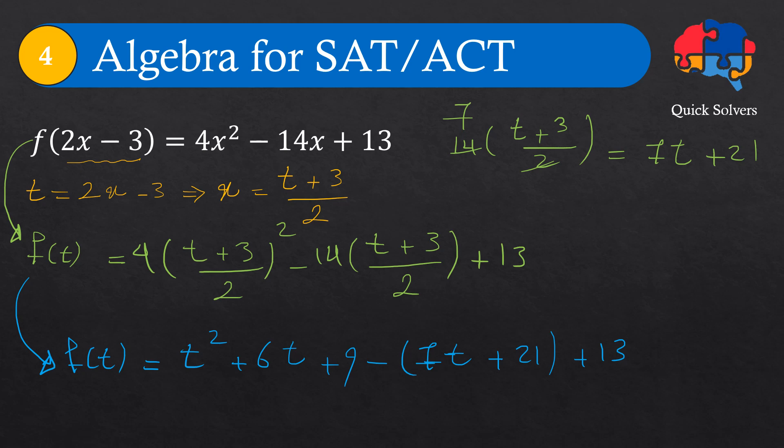If we add up everything here together, then we can write it as f(t) equals t². This 6t and minus 7t leaves us with minus t. And then we have 9 minus 21 and plus 13. 9 plus 13 is 22. Minus 21 is 1. So this is f(t). f(t) equals t² - t + 1.